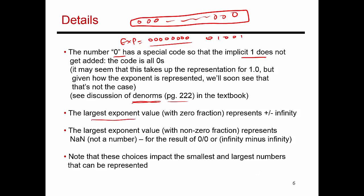Similarly, if I use the largest exponent value of 255 and my fraction is all 0s, that represents the special number plus or minus infinity — plus or minus depending on what the sign bit is. In addition to that, if I use an exponent value of 255 but my fraction field is not all 0s — that is, it does have a few 1s in it — then that represents another special number referred to as Not a Number. This is the number that will show up in the register if you try to do 0 divided by 0 or infinity minus infinity. So the largest exponent value, 255, is really not at my disposal for representing normalized binary numbers.